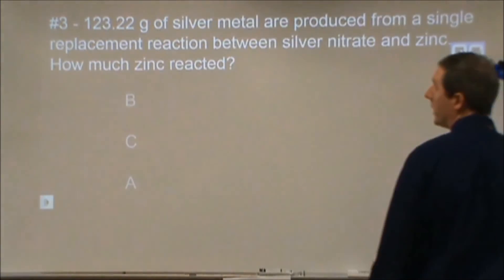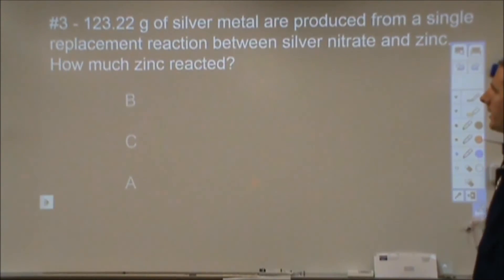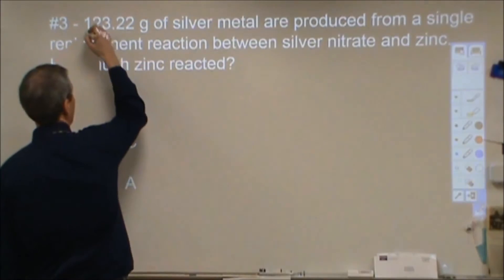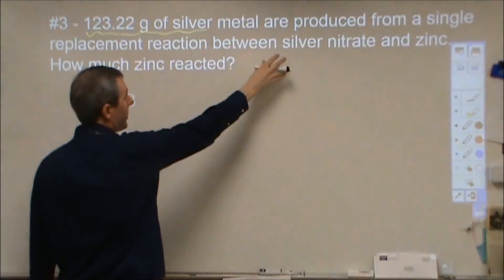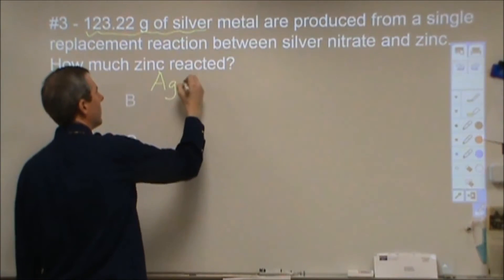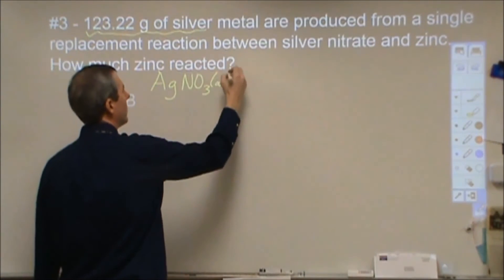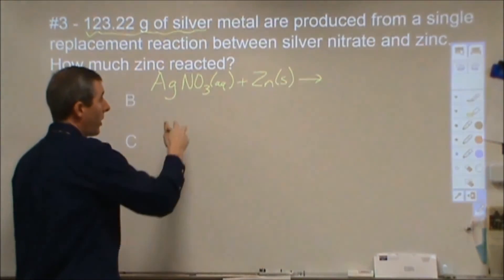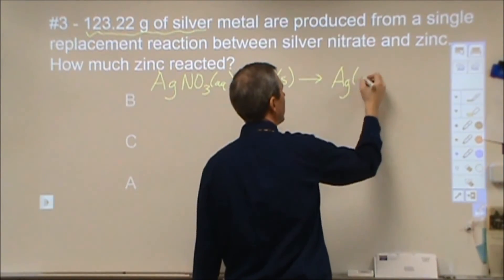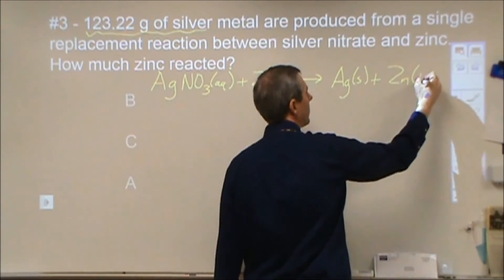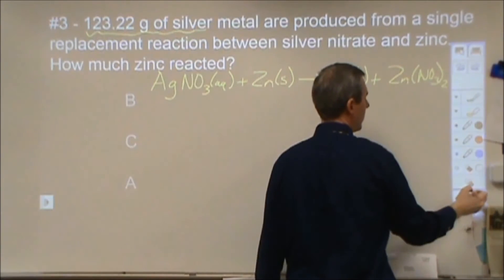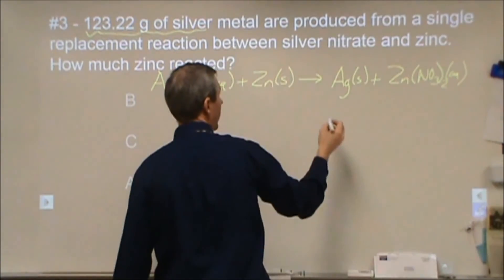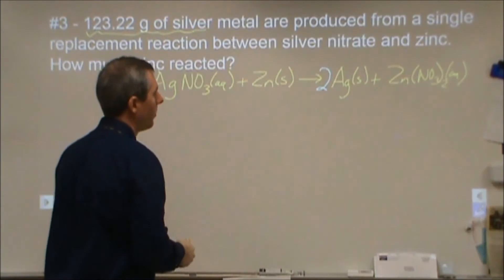Our last problem here, we're going to do a single replacement reaction between silver and zinc. Silver nitrate and zinc, how much zinc. This one is unique because this starts with a product. So we're looking at a single replacement reaction between silver nitrate, AgNO3 solution, and we're adding that to zinc metal. The products of this, we're going to produce silver metal and zinc nitrate. For balancing purposes, we're going to need a 2, a 2, and once for the zinc.